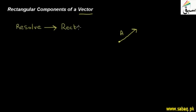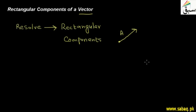Now, what are rectangular components? Rectangular components are components making a 90-degree angle — that is, they are perpendicular to each other. The angle between them is 90 degrees. These are called rectangular components.